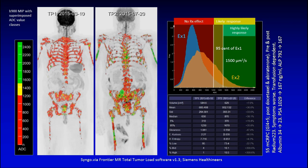Looking at the color maps, the lymph node in the right common iliac region has responded — it has gone from red to green, i.e., from no treatment effect to highly likely responding. In the lumbar spine, the color is red, indicating voxels in the active tumor range. But there are patchy areas of response, for example in the humeri and femora — a classical discordant response.